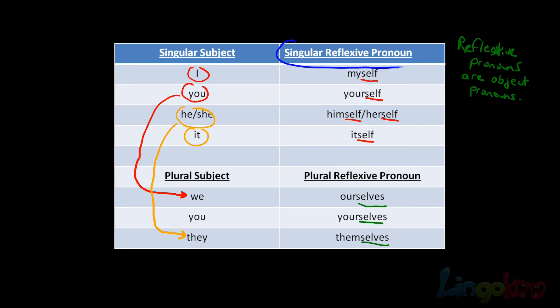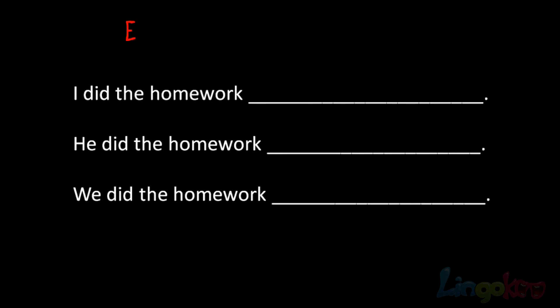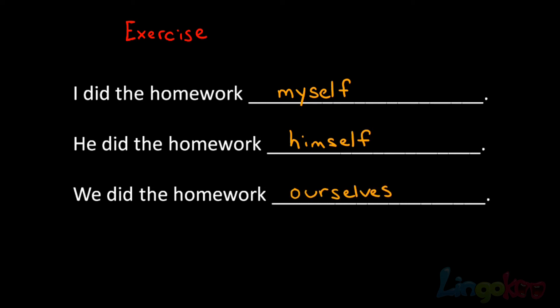Also, remember that reflexive pronouns are object pronouns. Let's do a quick check exercise. Fill in the blank for the following three sentences — what reflexive pronoun should we use? Give you a couple of seconds. If you said myself, himself, and ourselves, then you got it right.